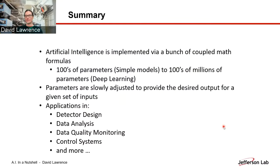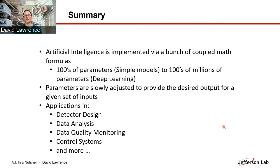So in summary, artificial intelligence is implemented via basically a bunch of coupled math equations. You have an equation from one set of neurons that feeds into another set of neurons and on and on. You can have hundreds of parameters for the very simple models, but hundreds of millions of parameters that go into these deep learning models. When we train the models, we're just adjusting all of those weight parameters very slowly in order to make the outputs match what we expect the outputs to be for our labeled data. Then we can apply the model to some other data that we haven't seen or it has never seen before to give us good answers. Applications for this are pretty much anywhere where you might have a human trying to make a decision. And so we do this a lot in detector design, data analysis, data quality monitoring, control systems and many more places around. So that's all that I have, but I'd be happy to answer any questions that you may have now.